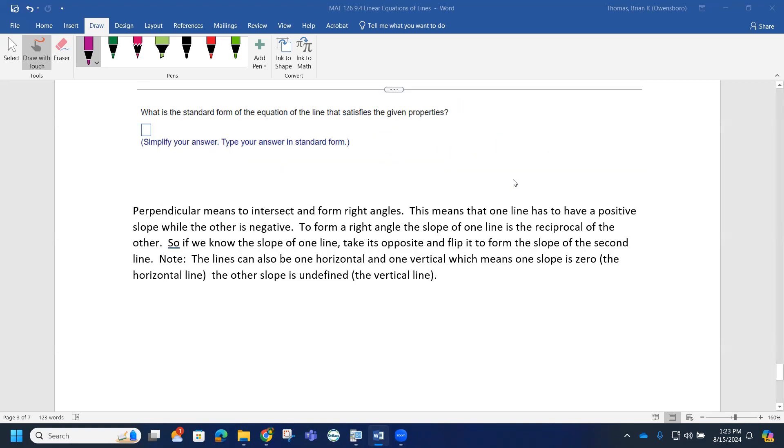Again, the word perpendicular means to intersect and form right angles. So if I have a line going in this direction and a line going in this direction, that's how they intersect and form right angles. One of the things you may notice here is one line is going to have a negative slope and one line is going to have a positive slope.